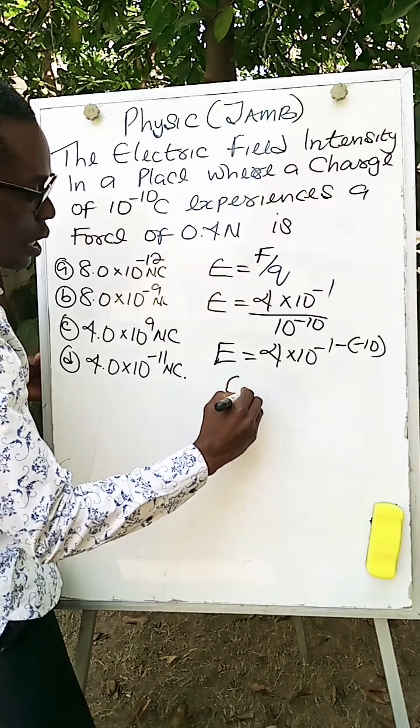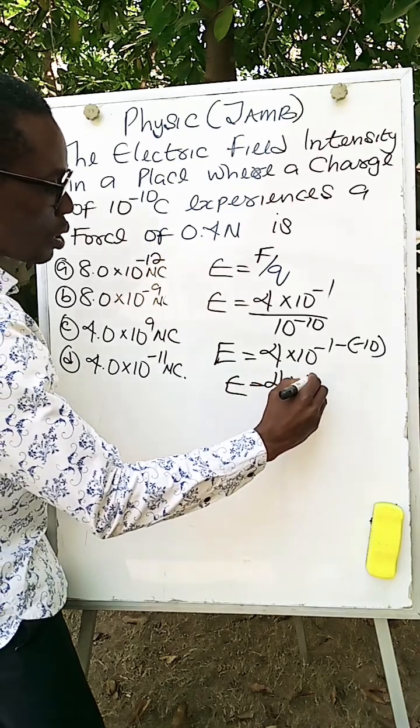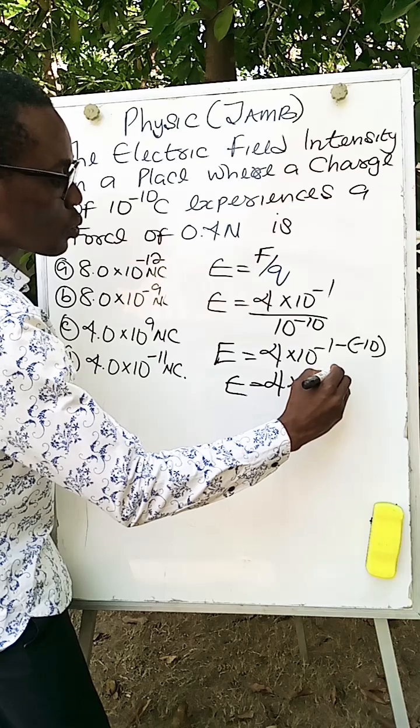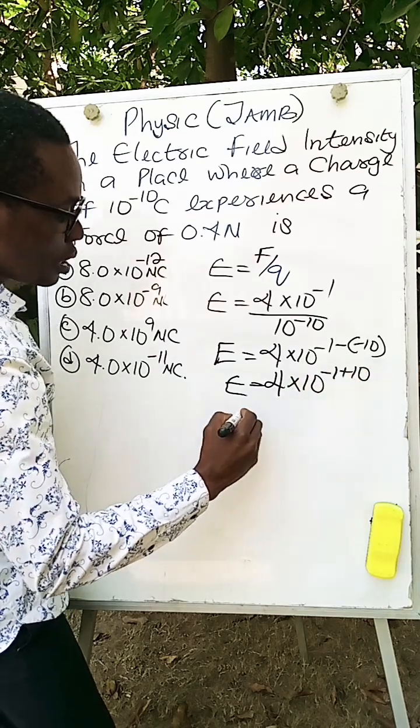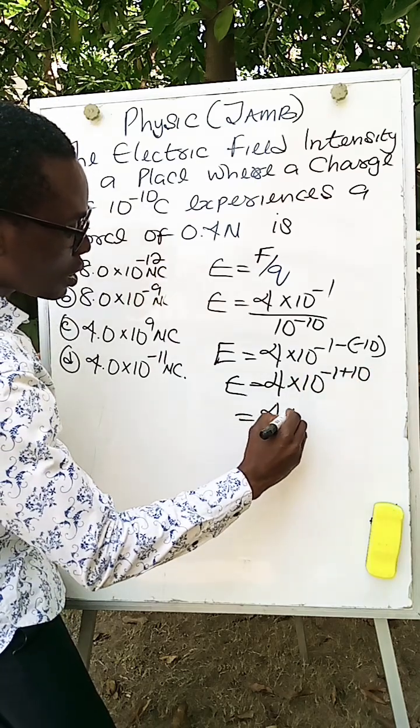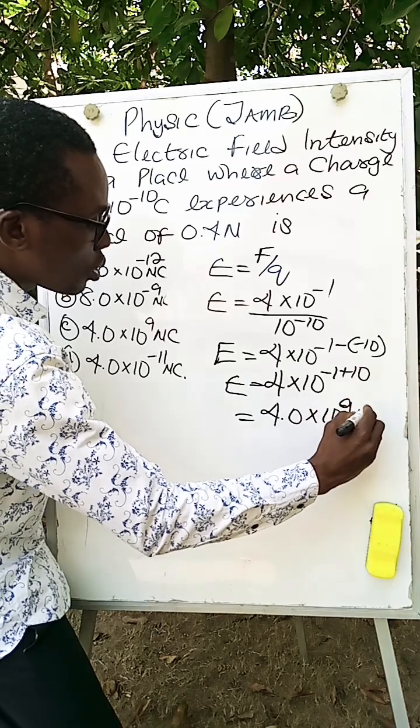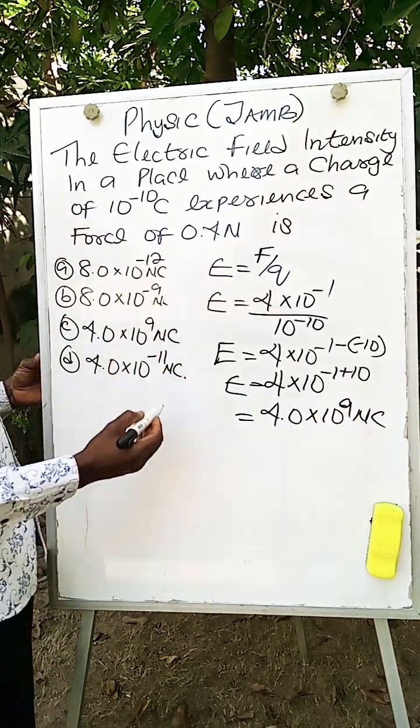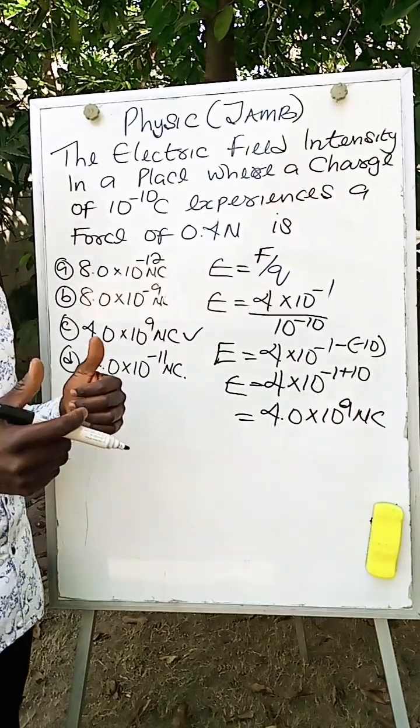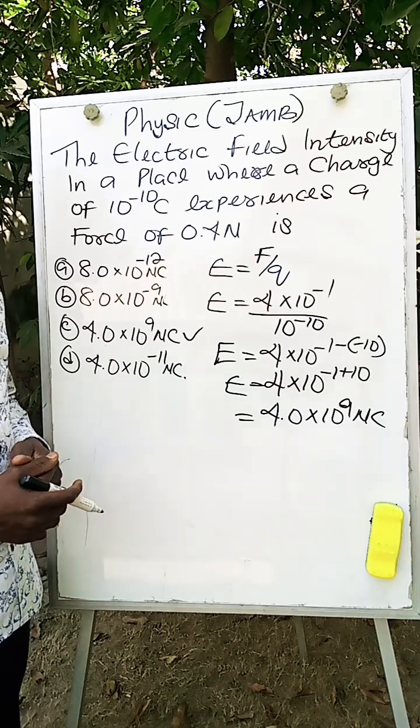So we will get E to be equal to 4 times 10 to the power of minus 1 plus 10. And this will be equal to 4.0 times 10 to the power of 9 Newton Coulombs, and that's the right option. Thank you, and please continue to watch this series.